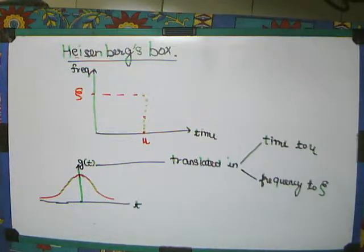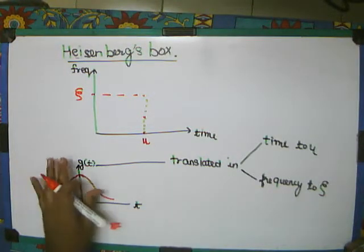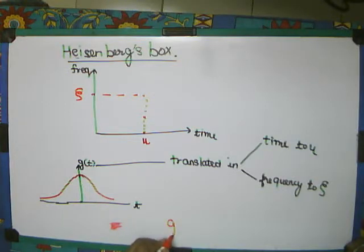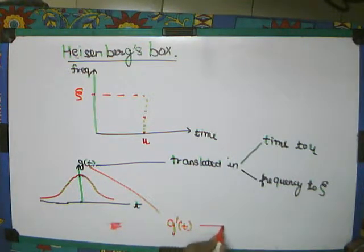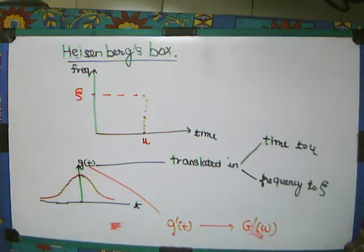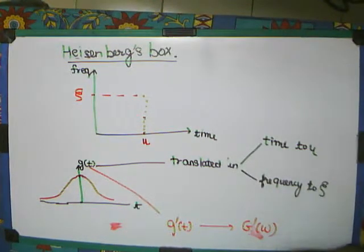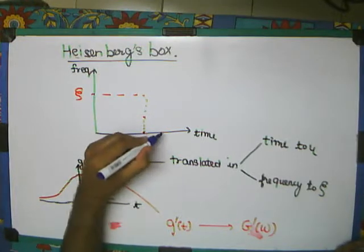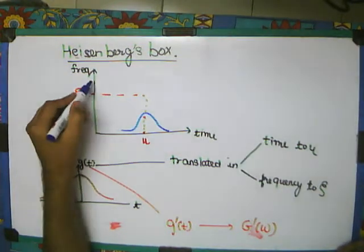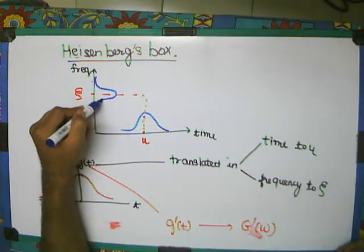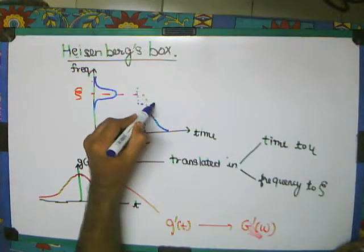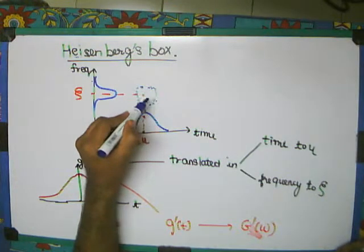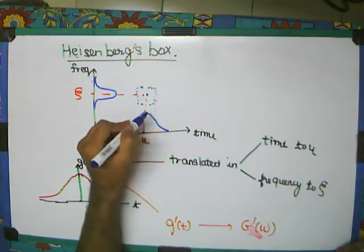How can we do this? If I take G of Omega, the Fourier transform of some modified version — I modify G(t) to some G-dash(t). If I take its Fourier transform, that G-dash(Omega) must be centered around some Zeta. This is somewhere here in time and somewhere here in frequency. And this is what we represent as Heisenberg's box, where there is some sort of variance in time and variance in frequency.